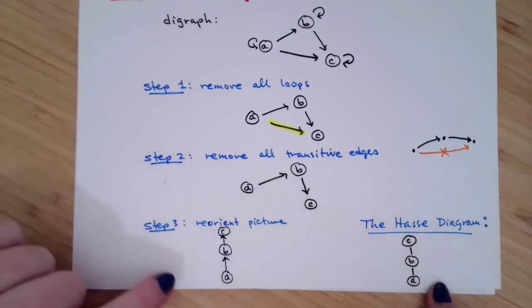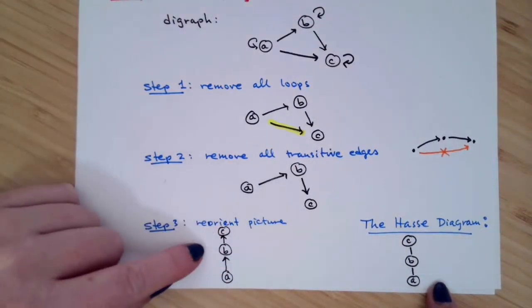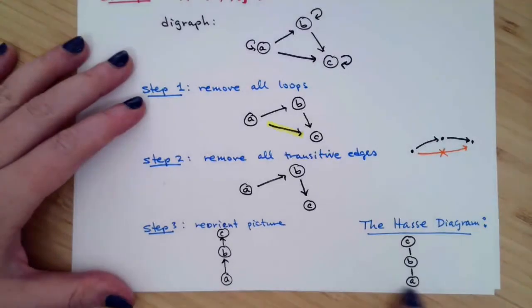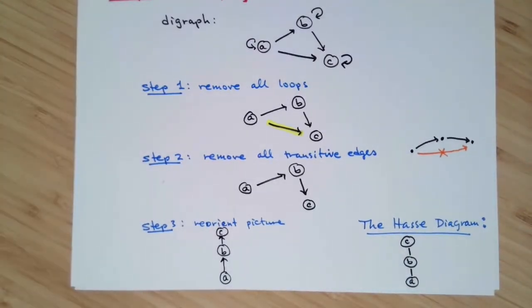That's not the finished answer yet, but we're almost there. So to finish this off, the final version and specifically the Hasse diagram is you take your reoriented picture and remove all of the arrowheads, so change all those directed arrows into just plain old line segments. And that's it, that's how to convert a digraph into a Hasse diagram.